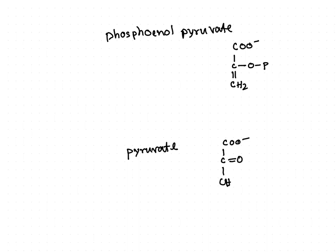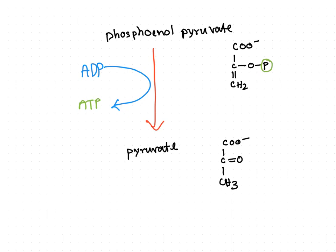In this conversion, the phosphate group is taken away by ADP in order to generate ATP. So ADP takes the phosphate group and ultimately ATP is generated. This phosphate group, by which ATP is produced, comes from phosphoenolpyruvate, which is another substrate for the glycolysis pathway. That is why these two steps are known as substrate-level phosphorylation.